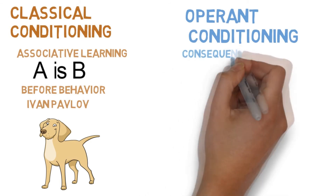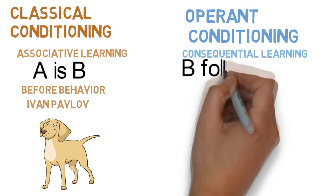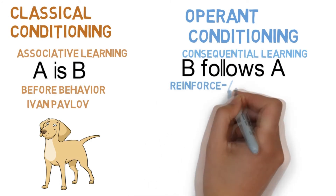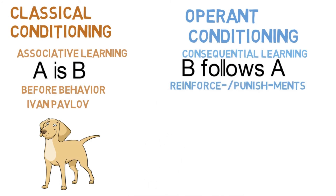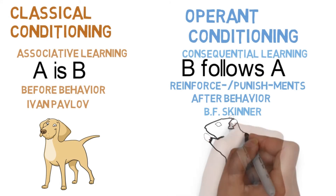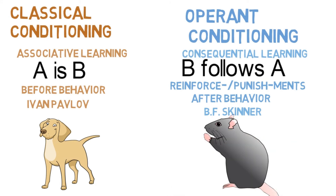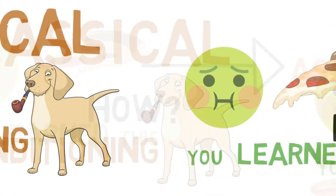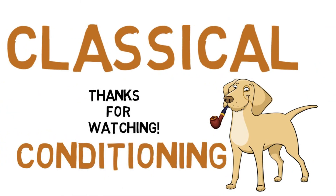Operant conditioning is learning through consequences. It has the ideas of reinforcements and punishments, focuses on behaviors you can control, and involves applying stimuli after a behavior. BF Skinner is the one who describes it using a Skinner box — a cage with a rat inside — so it's normally associated with rats and mice. So there you have it: classical conditioning. Next week we'll look at social learning theory. Like and subscribe for more content. Thanks for watching.